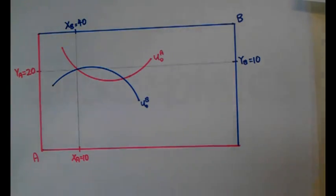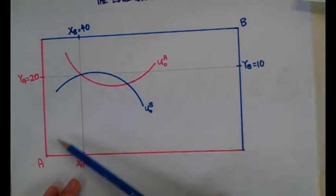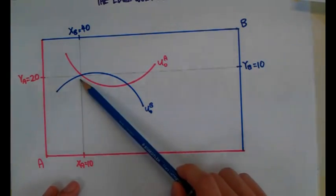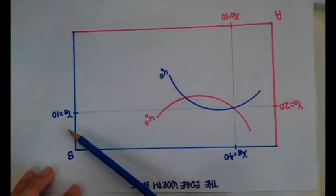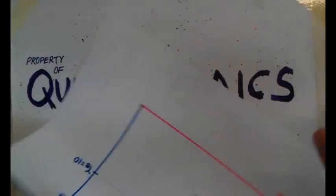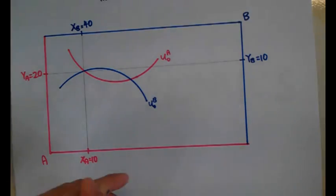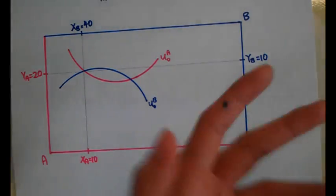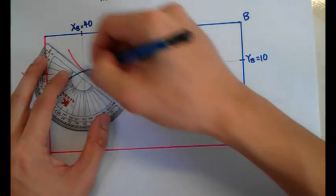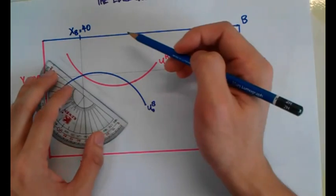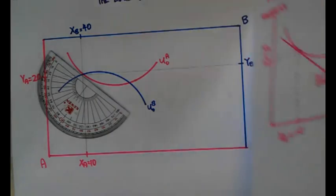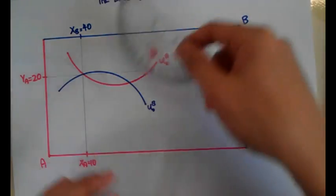That's the initial setup of the Edgeworth Box. If you were to add in the budget line, it will look like this. I'm just going to use pencil. I'm drawing this line but I'm omitting it a bit because I know that we're going to draw more lines and I don't want to confuse everybody. Let me darken it a little bit so you can see. We know that this slope is 2.